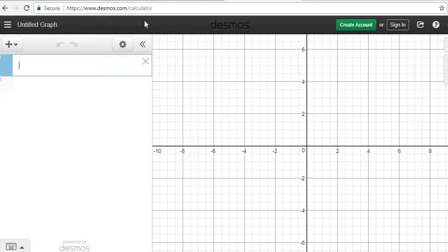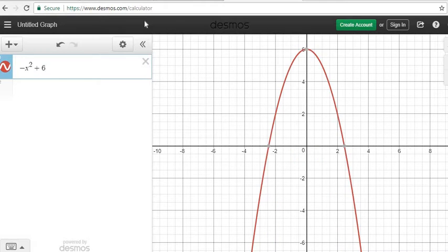And what you're going to do is you're just going to type it in. You don't have to type in the y equals or the f of x equals. You would just type in the negative x squared plus 6x minus 2.